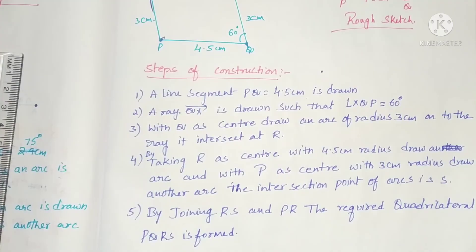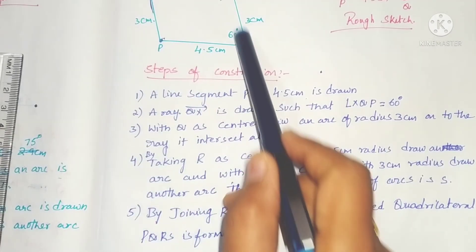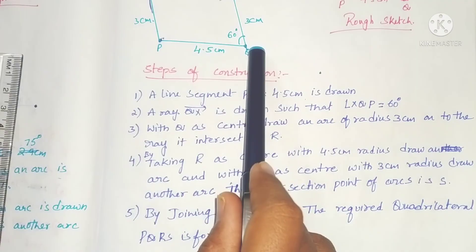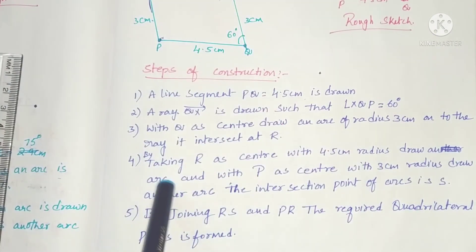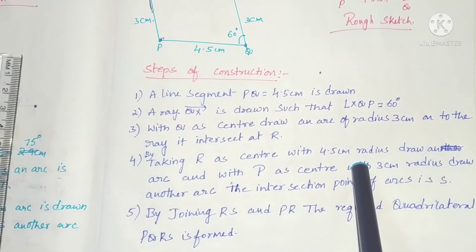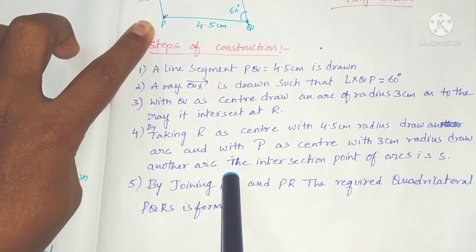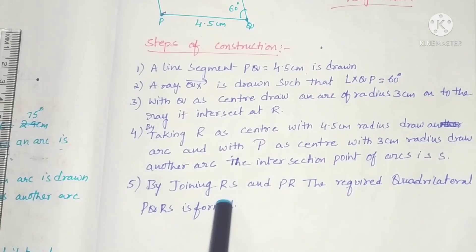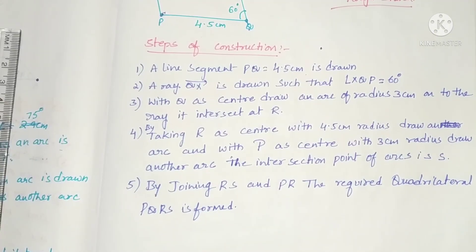Write the measurements: 3 centimeters, 4.5 centimeters, and 3 centimeters on the sides. Steps of construction: draw PQ = 4.5cm; draw ray QX such that angle XQP = 60 degrees; with Q as center and 3cm radius draw an arc intersecting at R; with R as center and 4.5cm radius and P as center and 3cm radius draw arcs intersecting at S; join RS and PS. The required parallelogram PQRS is formed.